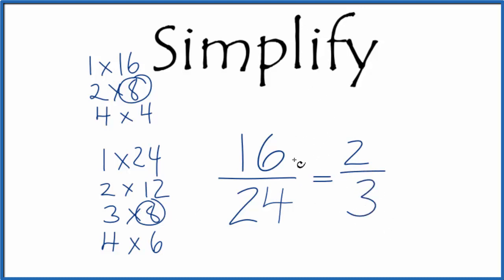So when we simplify the fraction 16 over 24, we get 2 thirds, and we can't reduce this any further. These two numbers are equivalent. If you divide 16 by 24 and 2 by 3, you'll get the exact same answer. They're equivalent fractions, it's just that we've simplified 16 over 24 to get 2 thirds.